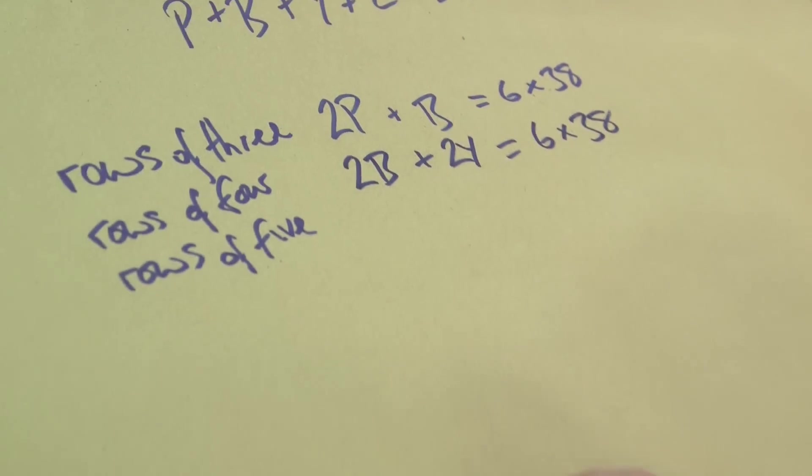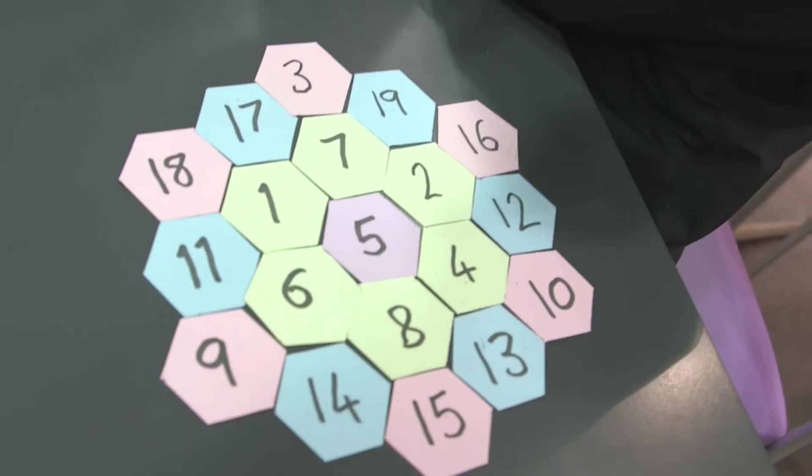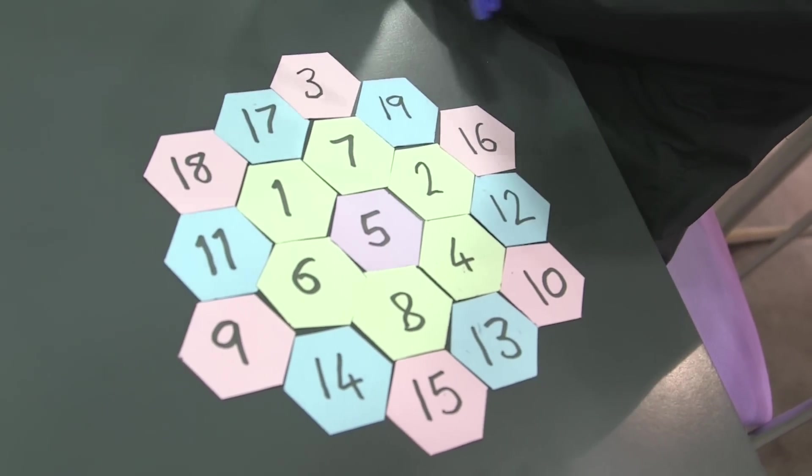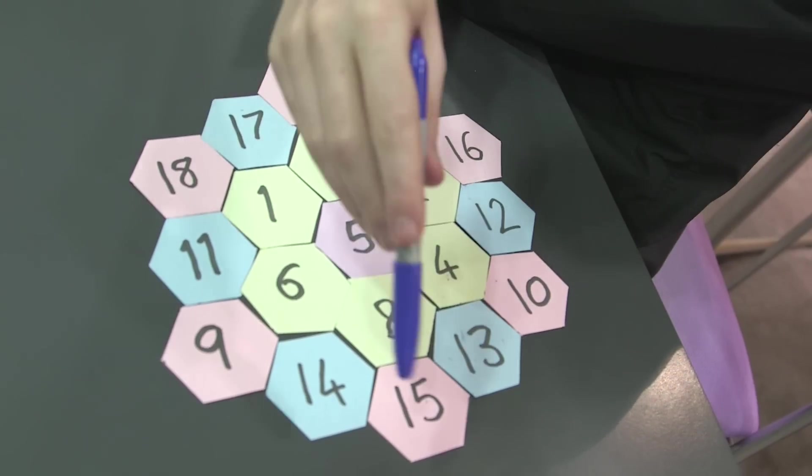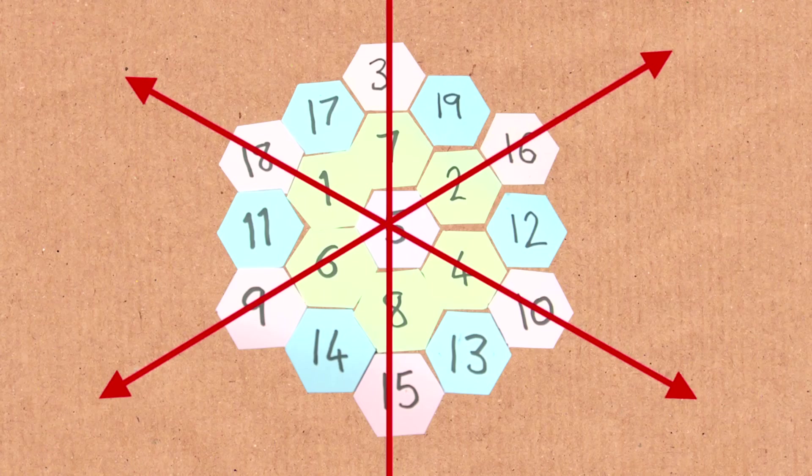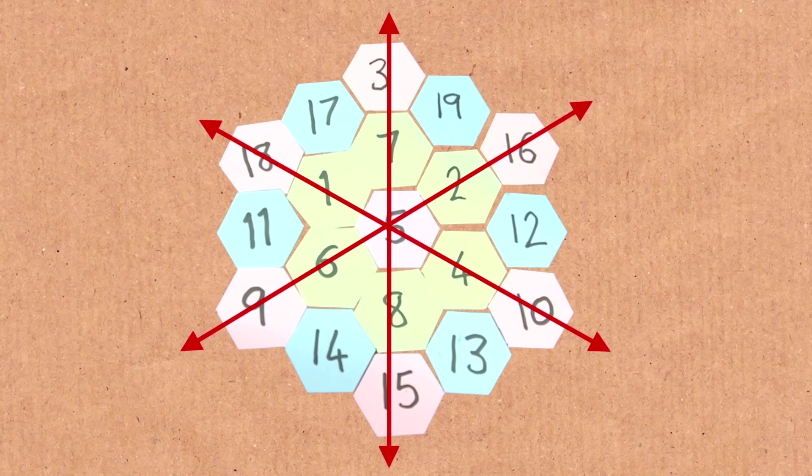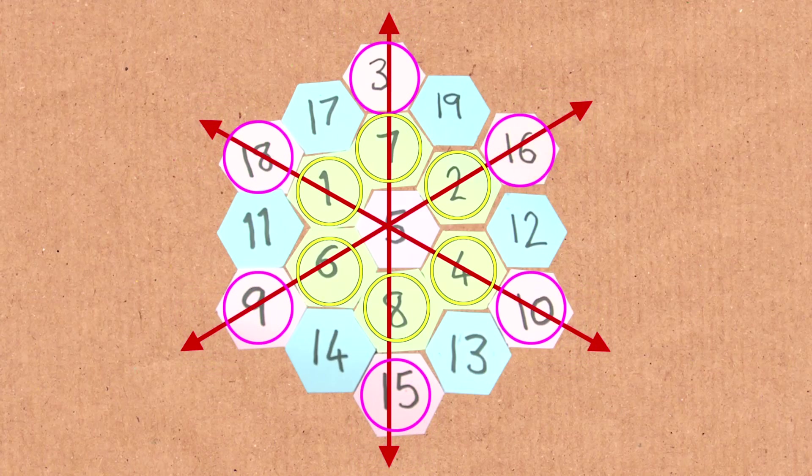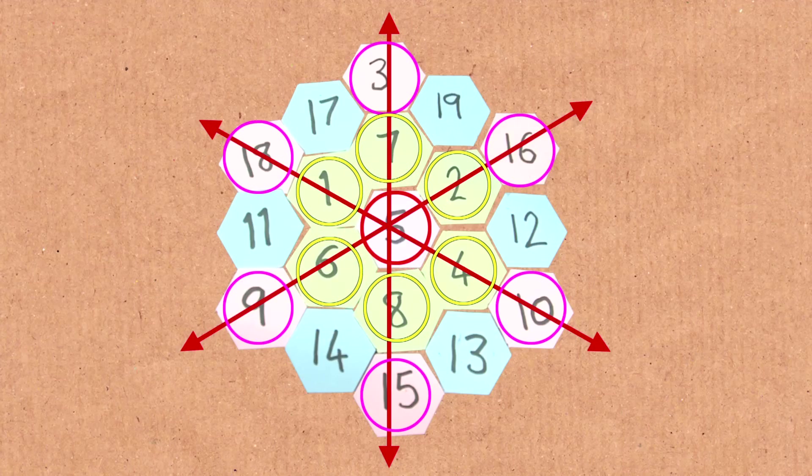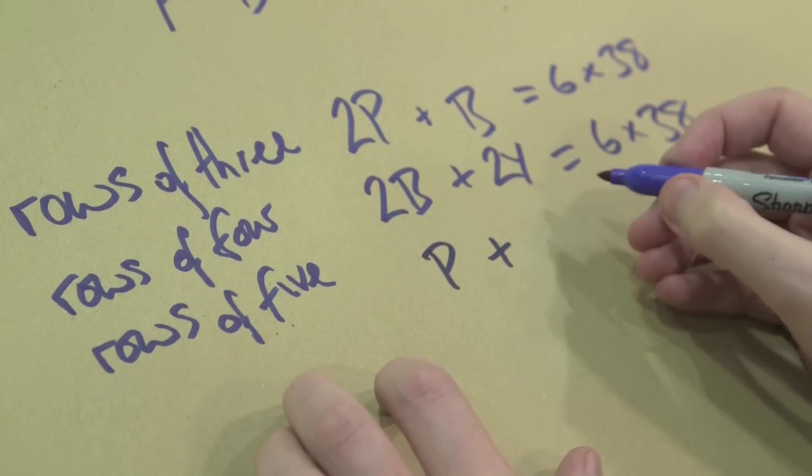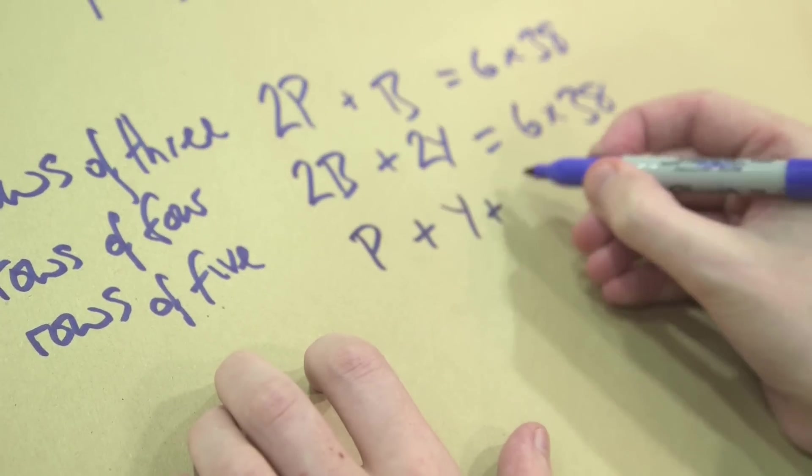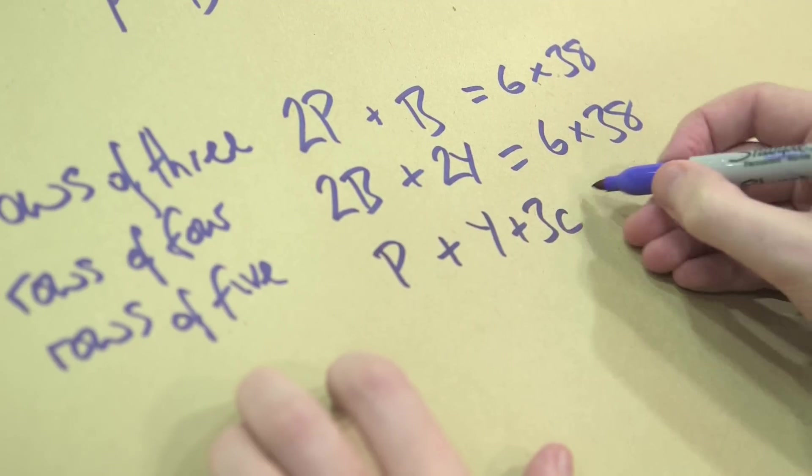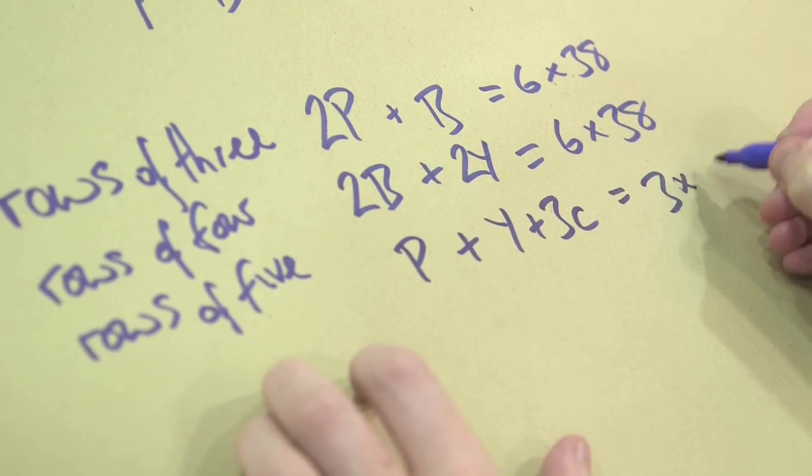And for the rows of five, they go straight through the centre like that. It's actually three of them. One, two, and three. So only three of those. The pinks get added once each time. The yellows get added once. The centre one actually gets added three times, because you go through the centre three times over. So you're going to get pinks plus the yellows plus three times the centre. And that's three lots of the magic number 38.